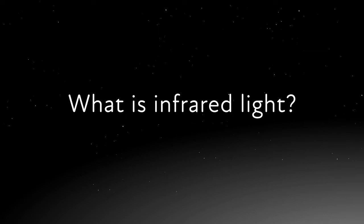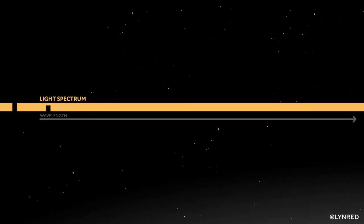What is infrared light? Light is an electromagnetic wave characterized primarily by its wavelength. The light spectrum is divided into segments or spectral bands.